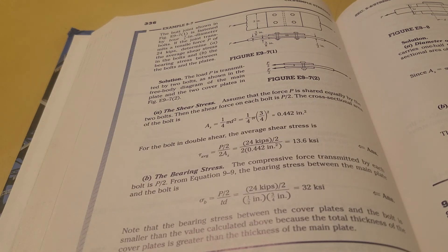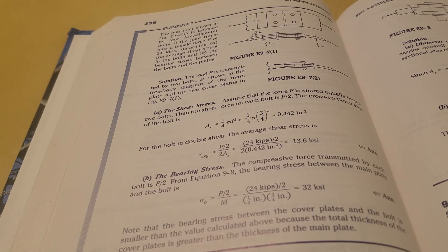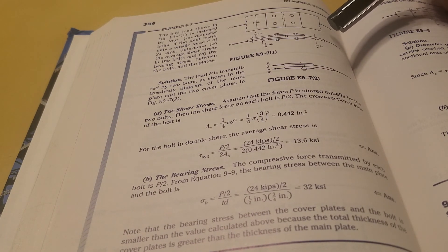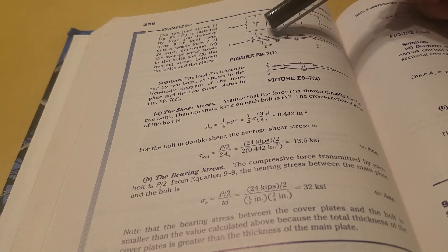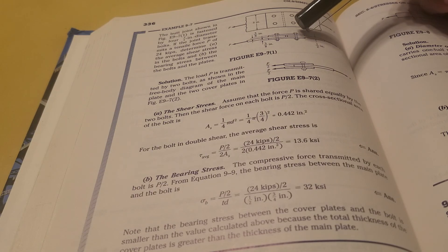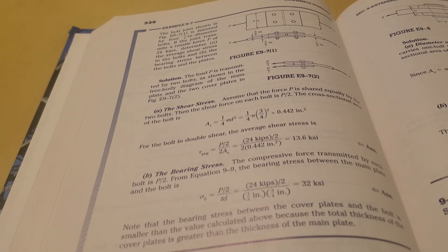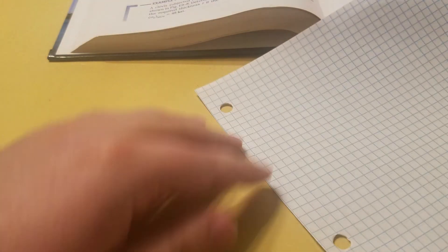24 kips. In this picture here they give you five-inch wide plates and these plates are three-eighths inch on the top and bottom and a half inch in the center. So that's a really good picture they gave us.